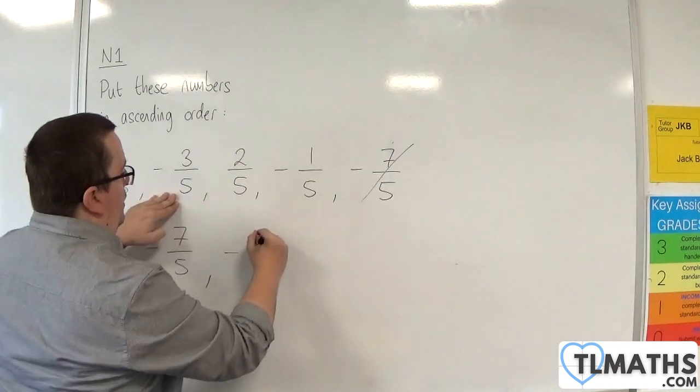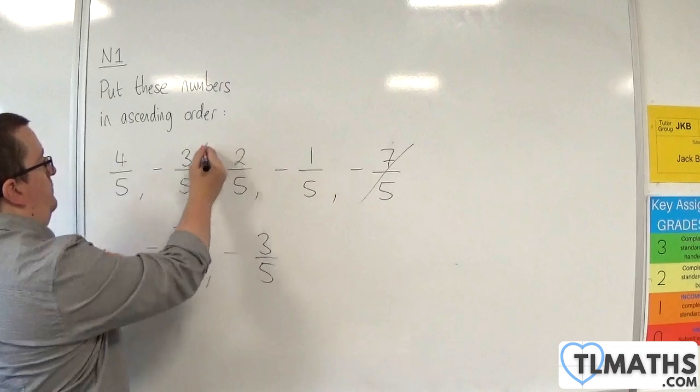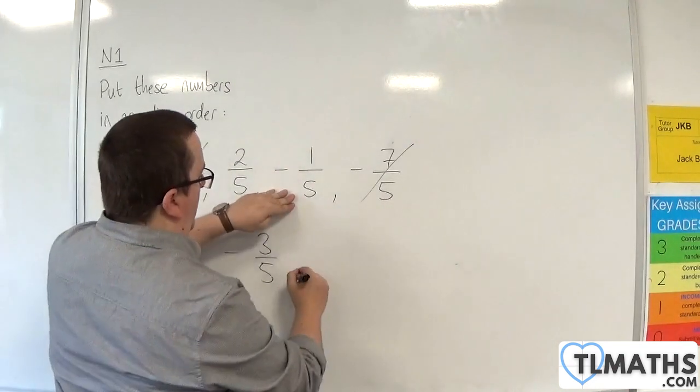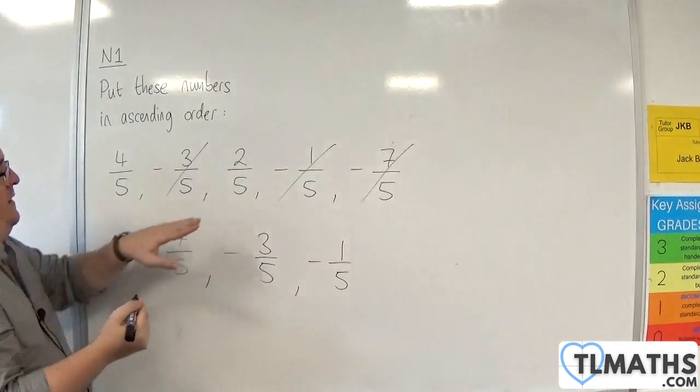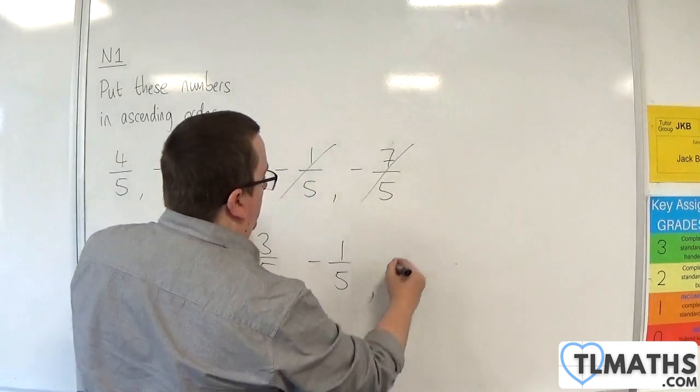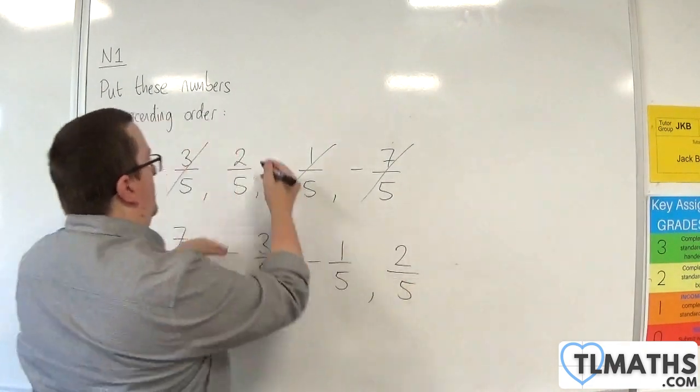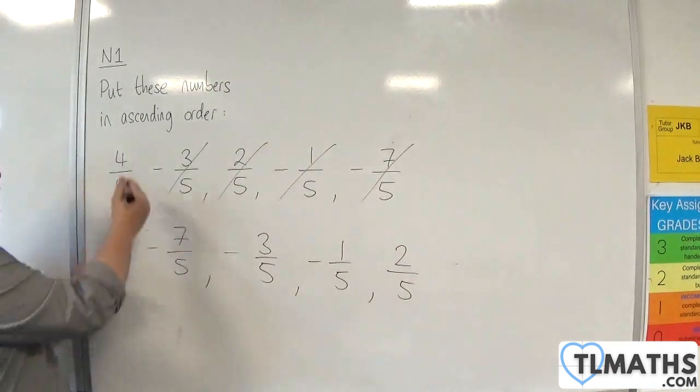Then we would have -3/5. Then we would have -1/5. Then the next smallest would be 2/5, and then 4/5.